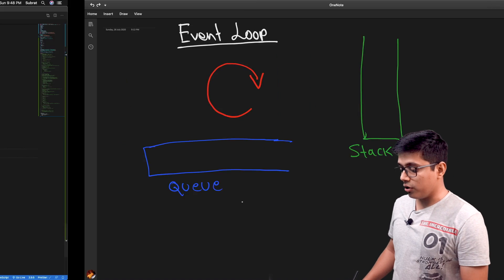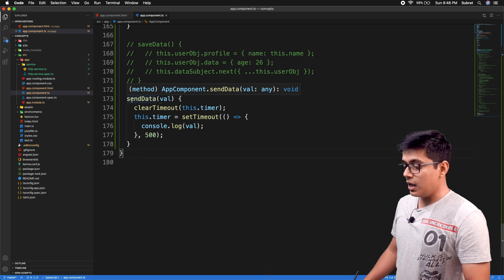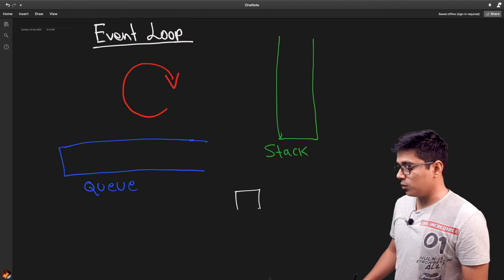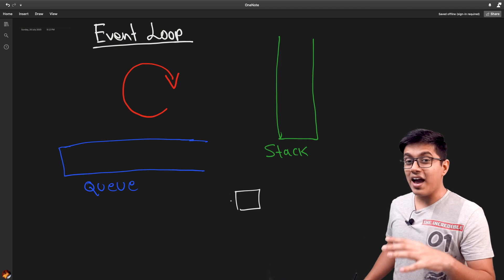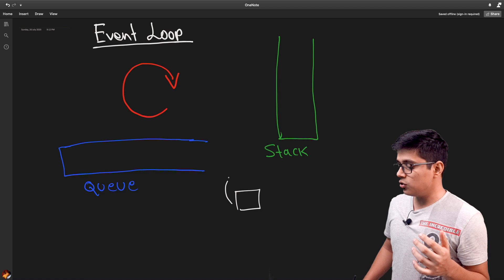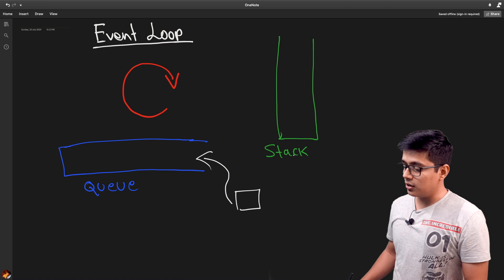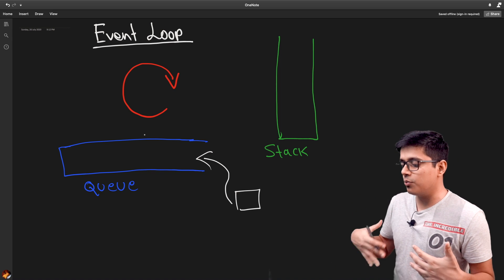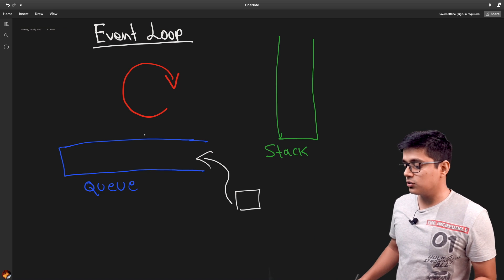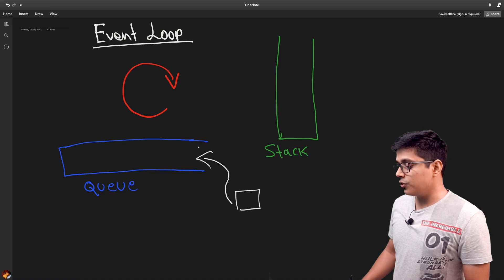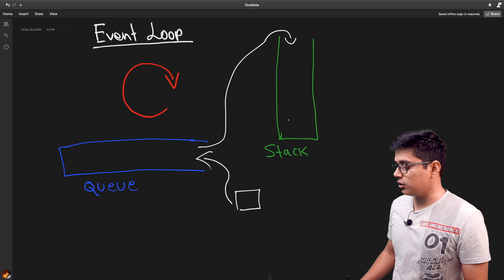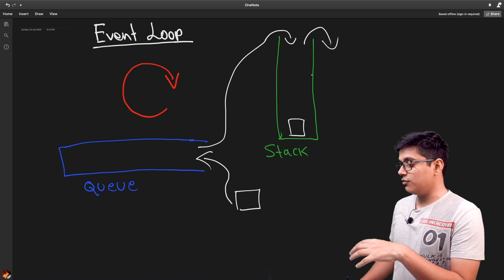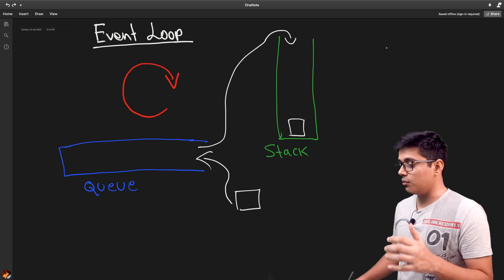Think of it like this: you have a setTimeout block of code. Once you call the method, it registers a callback for 500 milliseconds. As it's inside a setTimeout, the browser posts this to the task queue. The event loop keeps rotating — that's why it's called a loop — and it pulls the task from the queue and puts it in the call stack, where it then gets executed.